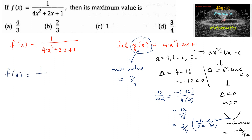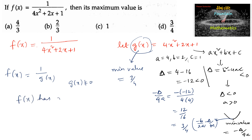But f(x) is equal to 1 upon g(x) since it is a reciprocal. Since g(x) is never equal to 0, f(x) has a maximum value where g(x) has its minimum value, and that maximum value is equal to 4 by 3. So we can go with option A — the maximum value of f(x) is 4 by 3.